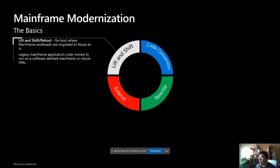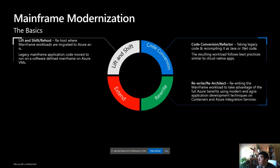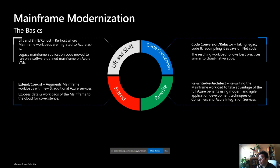With lift and shift, you move the workloads as they are to run on specific software that acts as an emulator or application deployment environment. In code conversion, you refactor from COBOL to Java or COBOL to .NET Core, producing applications that resemble cloud-native ones. You can also rewrite workloads, or extend and coexist to augment mainframe workloads with new Azure services.